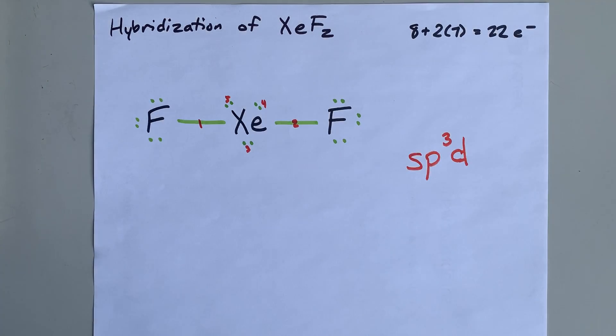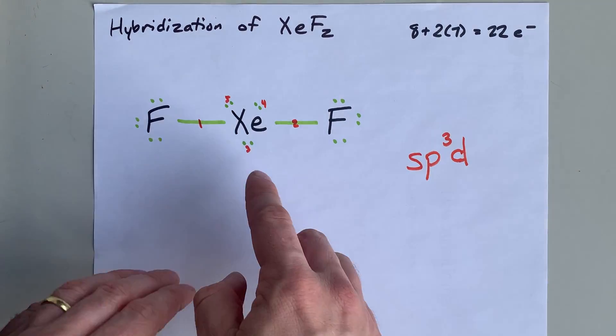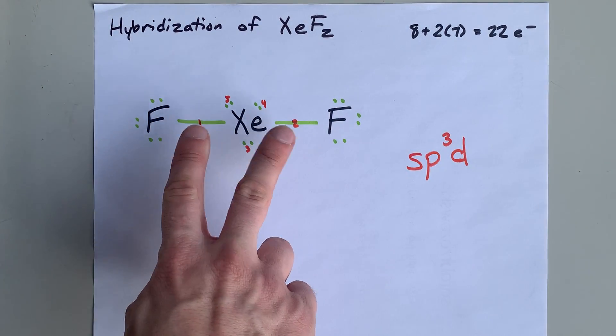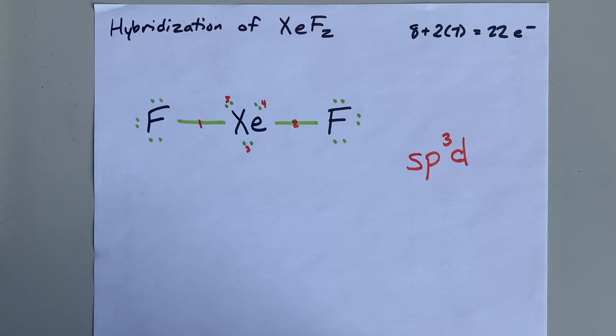And there you have it. There's your hybridization of XEF2. But you didn't know that until you knew that there were 2 single bonds, or sigma bonds, and 3 lone pairs around the central atom. Thanks for being with me, and best of luck.